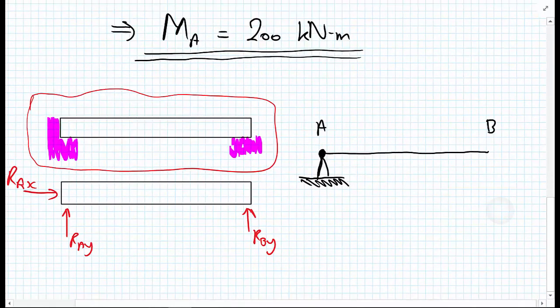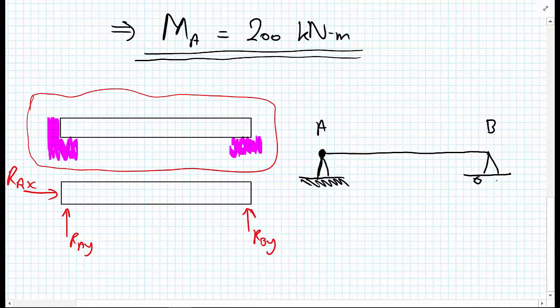At the right hand side we only had a y support and we call this a roller support. So in the x direction, B can move left or right as it pleases, but it cannot move in the y direction. To draw this we actually draw some little wheels so that it can roll left or right. Obviously these wheels need to be supported, and we call this a roller support. On the left hand side is pin support, and the right hand side we call a roller support.